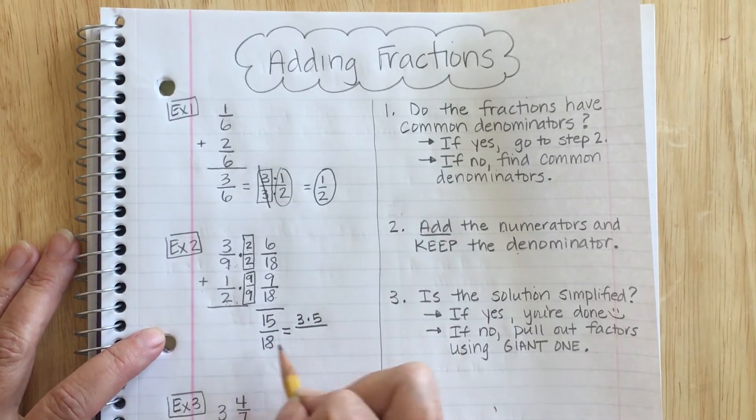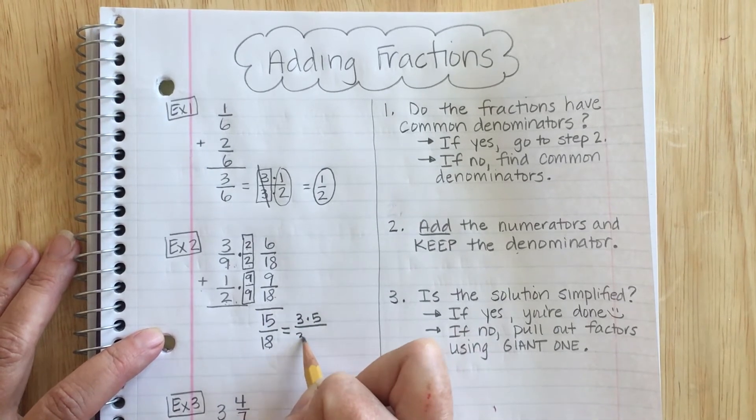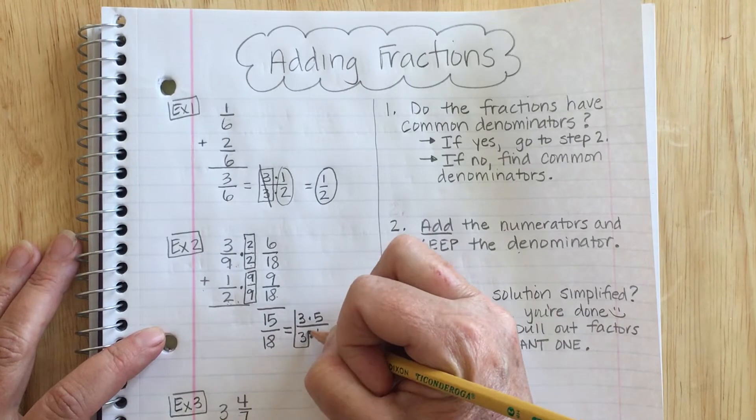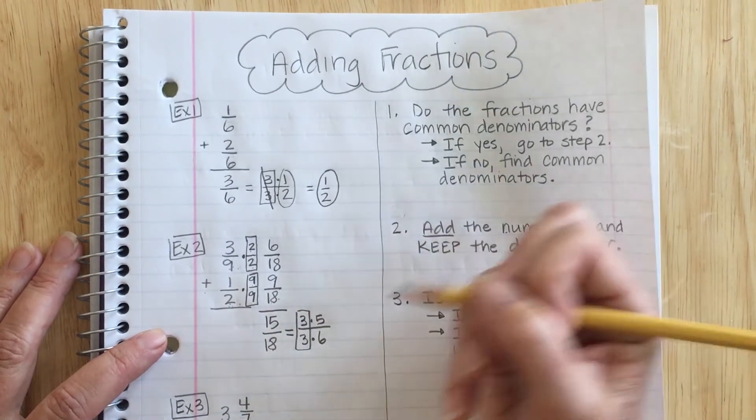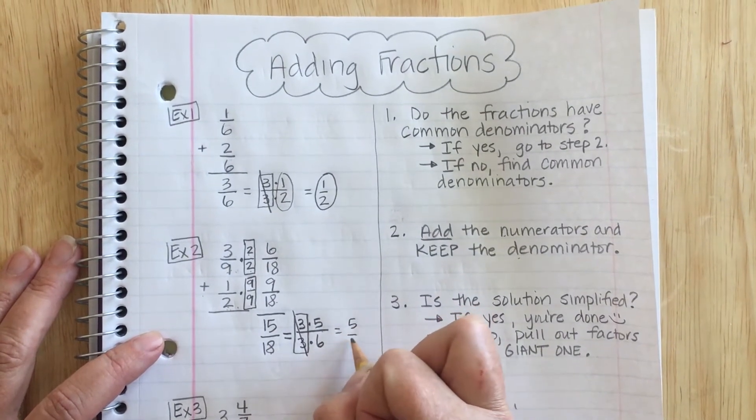Then I take a look at 18. What goes into 18? Well, 3 goes into 18. I know that 3 times 6 is 18. I notice that 3/3 is a giant 1. So I can take it out. I'm left with my answer of 5/6.